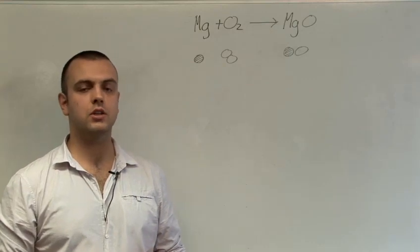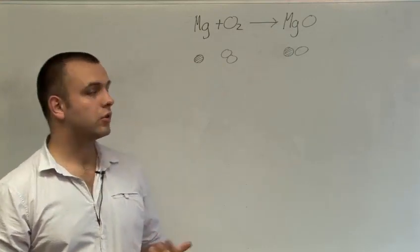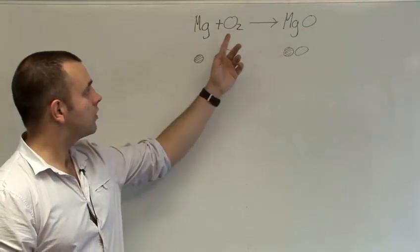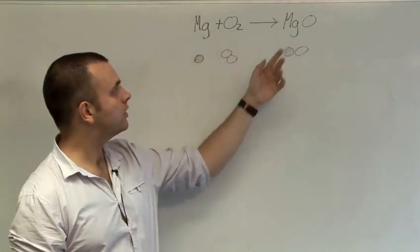Balancing equations is a very important skill in chemistry. Take this example, the reaction of magnesium with oxygen. Magnesium reacts with oxygen in the air to form magnesium oxide.